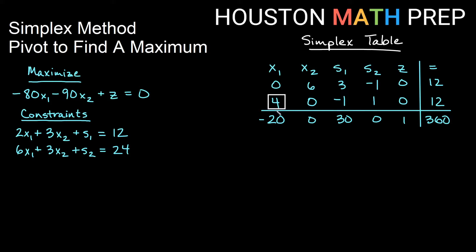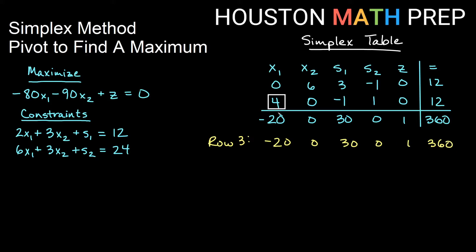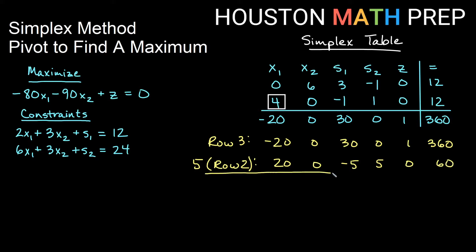The last thing we need to do with the pivot of 4 is change the negative 20 to a zero — so we're changing row three: negative 20, 0, 30, 0, 1, 360. To get rid of negative 20 I need a positive 20. To turn 4 into a positive 20, I multiply the pivot row by 5. Multiplying the pivot row by 5 gives a positive 20; adding those together gives 0. We get: 0, negative 5 plus 25, 0 plus 5, and 12 times 5 gives 60.